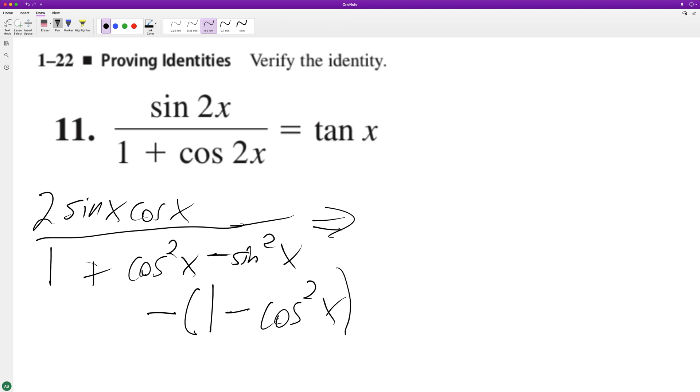So, this becomes two sine of x cosine of x over one plus cosine squared x minus one plus cosine squared x.